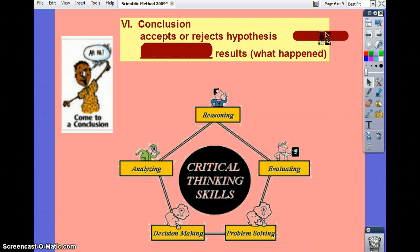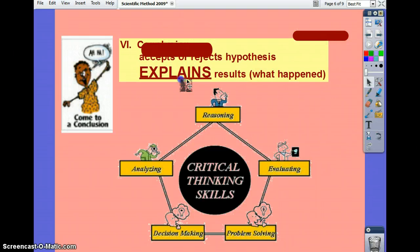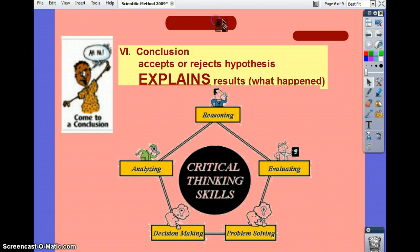Good. It's going to accept or reject your hypothesis. It must include that statement. And what else? What's the big word there that's covered? What is the conclusion going to do that the results does not? Or your data does not? Give me a better word. Explain. Why did this happen? I need an explanation. Why did the plant grow? That's where the background knowledge and data comes in together.